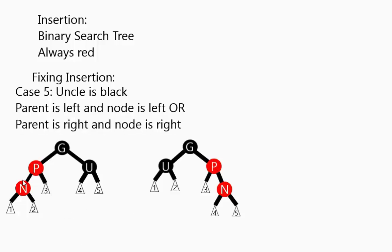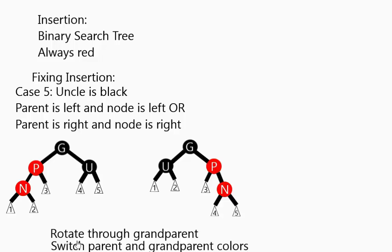Case 5 is basically what we just altered our tree to in the previous example. So if you have a parent and node that are both red, the uncle is black, and you have left left or right right, we are going to do a tree rotation through the grandparent. The other thing we do is we switch the parent and grandparent colors. So the grandparent becomes red, the parent becomes black.